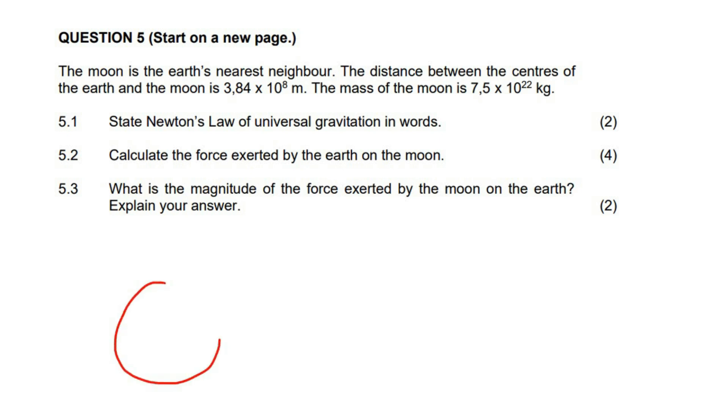We've got this, and we've got this, so let's say this is the Earth, and this is the moon. Now, it says that the moon is the Earth's nearest neighbor. The distance between the centers, hello, not the surfaces, the centers. Let's write that a bit better, Earth.